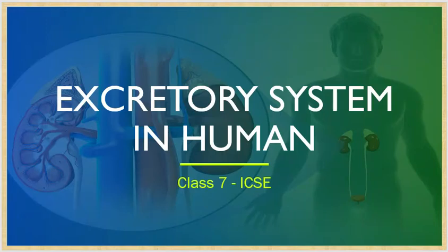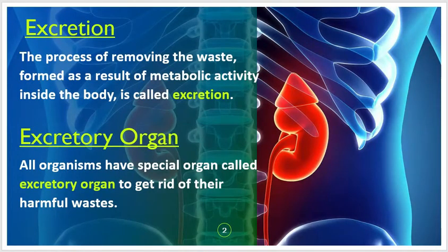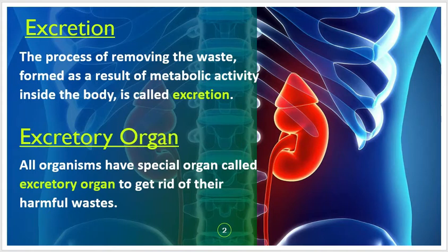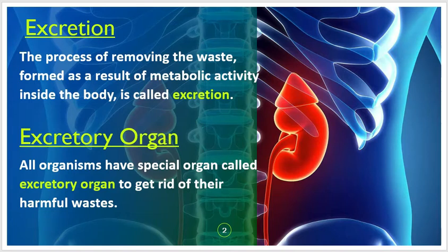Hello children. In this video we are going to learn about the excretory system in the human body. Excretion is the process of removing waste formed as a result of metabolic activity inside the body. To conduct the excretion process, there are some organs inside our body called excretory organs. All organisms have special organs called excretory organs to get rid of their harmful waste.